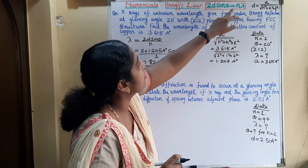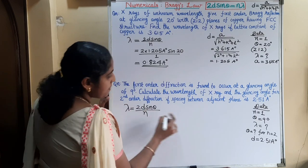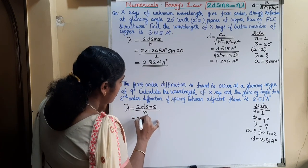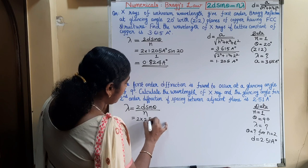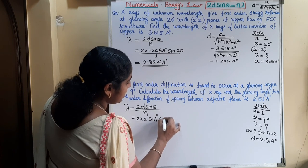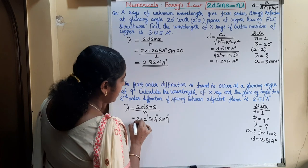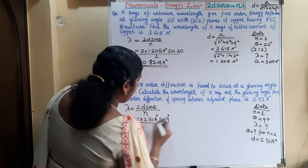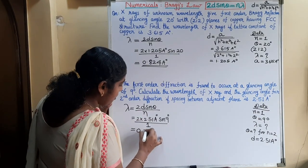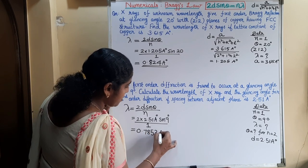Lambda can be found using 2D sin theta divided by N. Substituting values: 2 into 2.51 Angstroms into sin 9 degrees divided by 1. On calculating, we get lambda equals 0.7853 Angstroms.